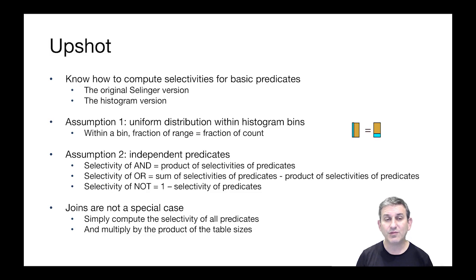Remember we made two key assumptions. The first assumption was that we have uniform distribution of values within histogram bins. Every value is equally likely within the bin and as a result within the bin the fraction of the range of the bin that you cover is the same as the fraction of the count of values that you cover.